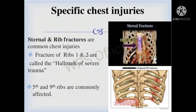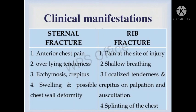Sternal and rib fractures are the most common chest injuries. Fractures of ribs 1 and 2 are called the hallmark of severe trauma, and ribs 5 through 9 are most commonly affected. Clinical manifestations of sternal fracture include anterior chest pain, overlying tenderness, pain to touch, ecchymosis — bluish coloration of the skin — crepitus, which is a creaking sound produced by fractured bone, swelling, and possible chest wall deformity such as asymmetry.